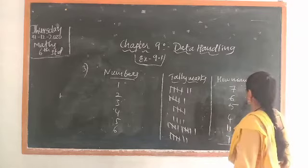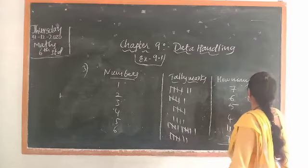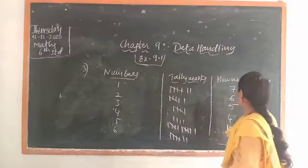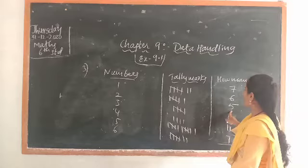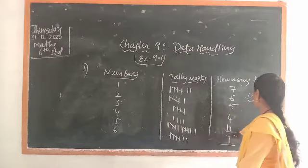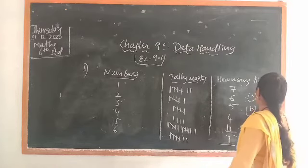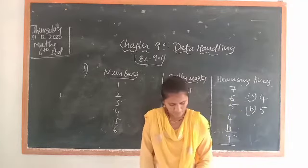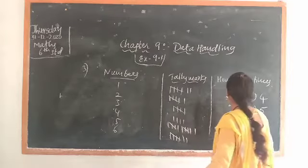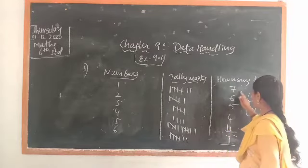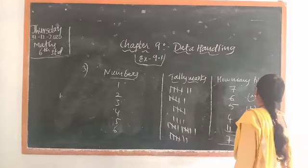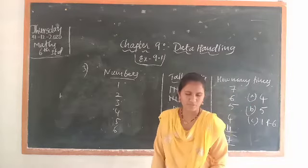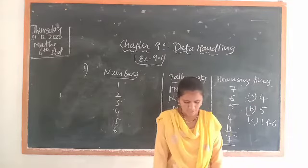Answer A is 4. For question B, the maximum number of times a face appeared — the answer is face 5, which appeared 11 times. For question C, find those numbers that appear an equal number of times. Faces 1 and 6 both appeared 7 times, so the answer is 1 and 6.